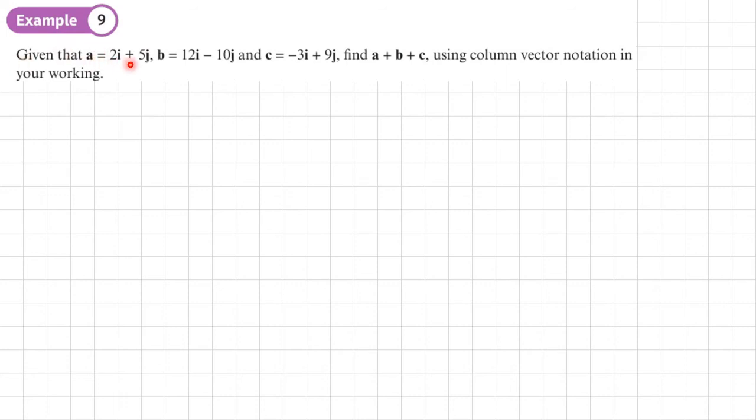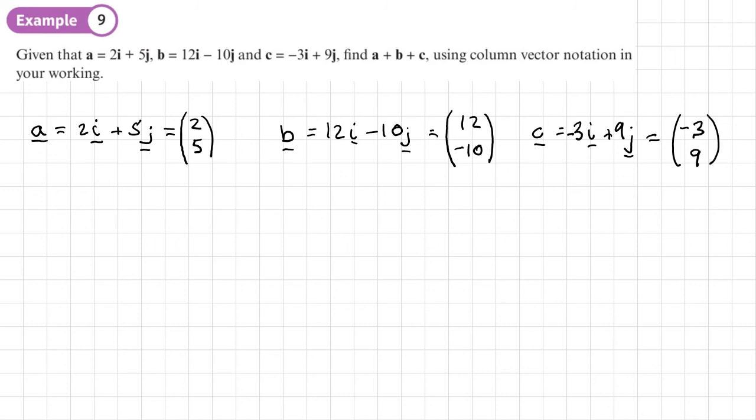Example 9. Given that A equals 2I plus 5J, B equals 12I minus 10J, and C equals negative 3I plus 9J, find A plus B plus C using column vector notation in your working. Right, so the first thing we will do is we'll write these vectors which are written using the I J unit vectors as column vectors. So 2I plus 5J just becomes 2, 5. With B, 12I minus 10J becomes 12, minus 10, and C, negative 3I plus 9J becomes negative 3, 9. So you can see, basically, the coefficient of I goes at the top. The coefficient of J goes at the bottom.